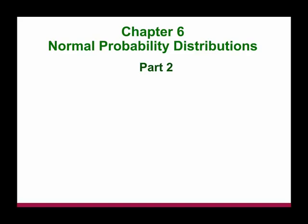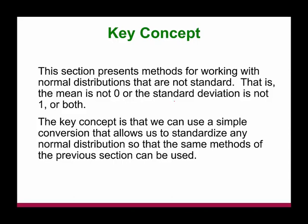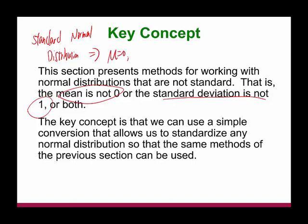Let's continue on chapter 6 on normal probability distribution. We can also simplify this with normal distribution. In this section, we're going to concentrate on non-standard normal distribution. Standard normal distribution is a special case of normal distribution, because mu equals zero and standard deviation equals one. So now we're going to deal with normal distribution where the mean is not zero and the standard deviation is not one, or both. The key thing is we're going to use a simple conversion that allows us to standardize any normal distribution, so that the same method from the previous section could be used.